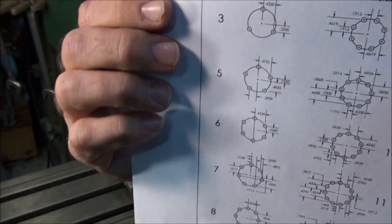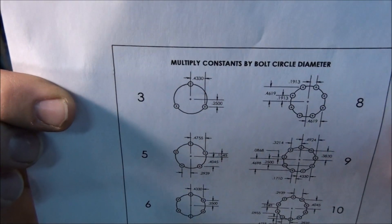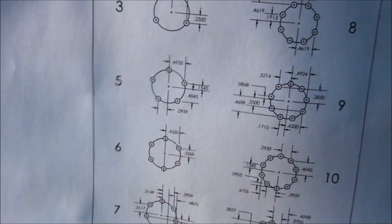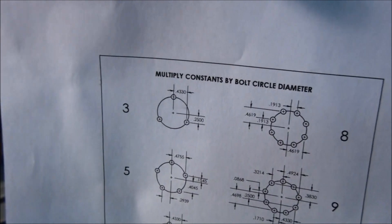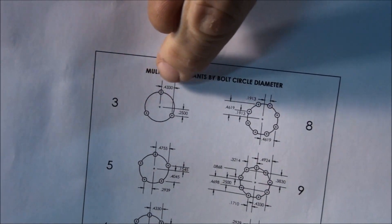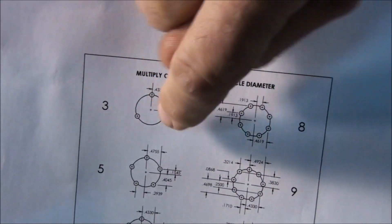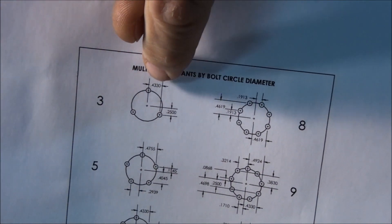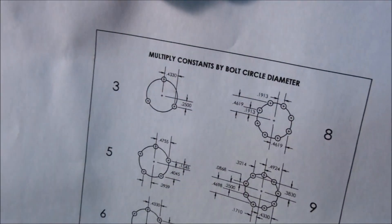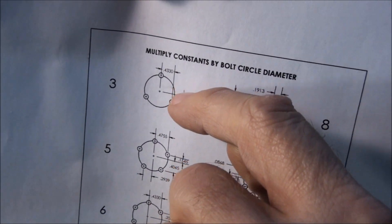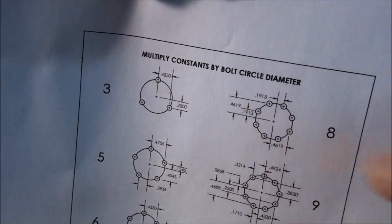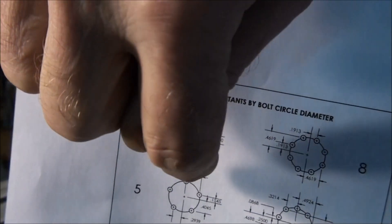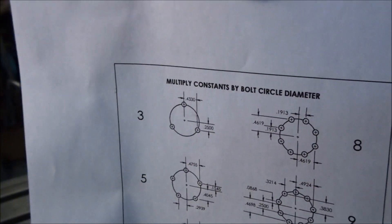In this case, if you look right up here in the corner, you'll see a three-hole pattern. Right there. And this three-hole pattern has constants on it. It has a constant for the distance from the center of the hole over to this second and third hole on the bottom. That distance is .433. It also has another number for the Y offset from center to these holes, which is .250. Those are constants. These are all based on a one-inch diameter bolt circle or pitch circle.